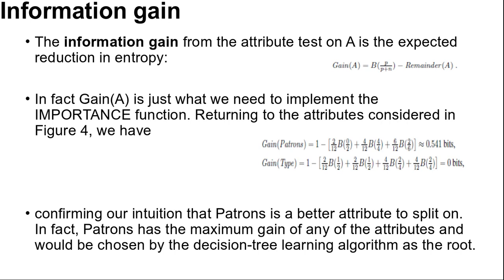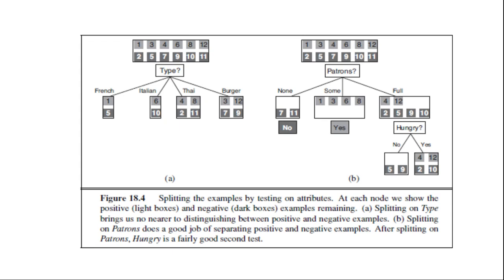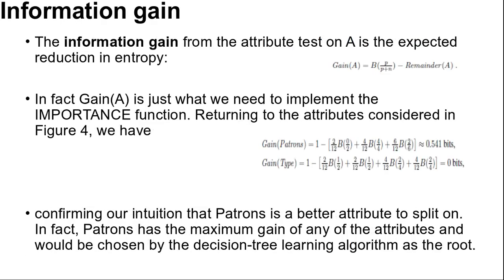Gain(A) is just what we need to implement the importance function. Returning to the attributes considered in the figure, we have Gain(Patron) equals 0.541 bits and Gain(Type) equals 0 bits, confirming our intuitions that Patron is a better attribute to split on. In fact, Patron has the maximum gain of any of the attributes and would be chosen by the decision tree learning algorithm as the root.